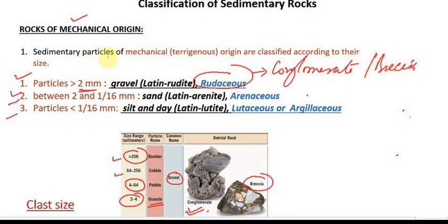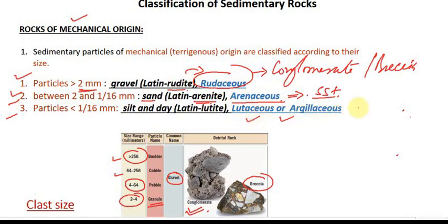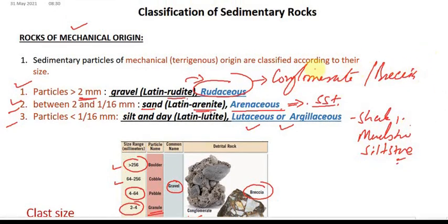If the particle size is between 2 mm and 1/16 mm, we call it sand — and in Latin, sand is called 'arenite', so the rocks are called arenaceous. Similarly, Latin for gravel gives us the term rudaceous. If particle size is smaller than 1/16 mm, we call them lutaceous or argillaceous rocks, such as shale, mudstone, and siltstone. So conglomerate is formed by gravel — whether pebble, cobble, boulder, or granule.